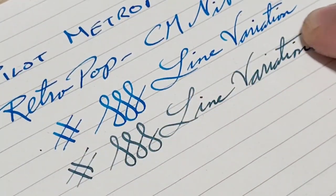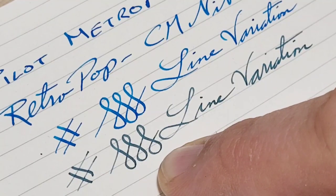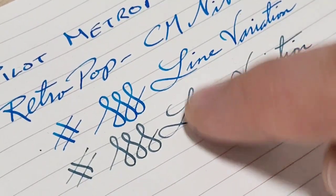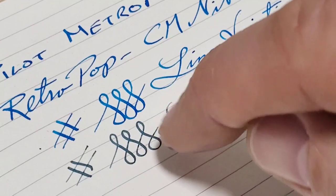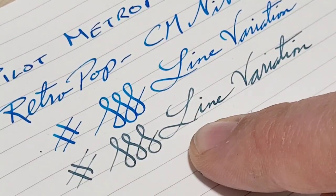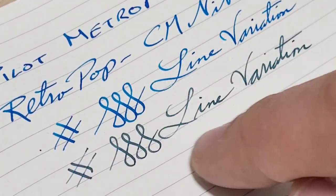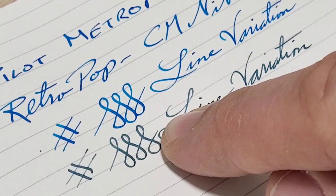So having a closer look, we can see with the Metropolitan looks like we're getting a little bit bigger line variation than we are with the Twsbi 1.1 millimeter. The Twsbi does underwrite. So if you measure this, this isn't 1.1 millimeter. So this is probably a little bit closer to a one millimeter and this I think runs about 0.8 or something like that.